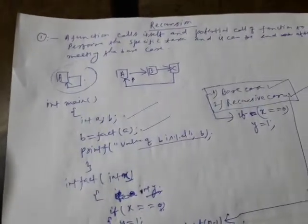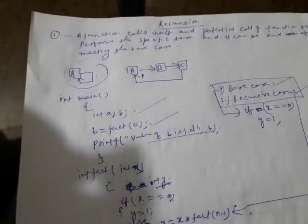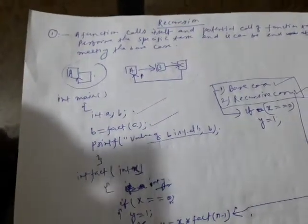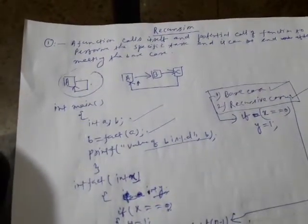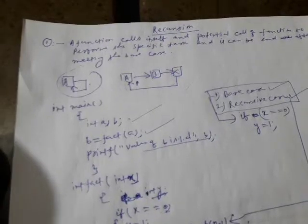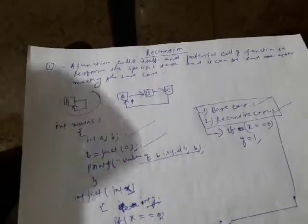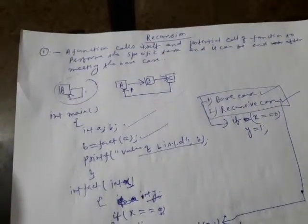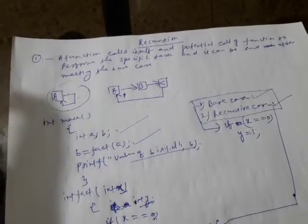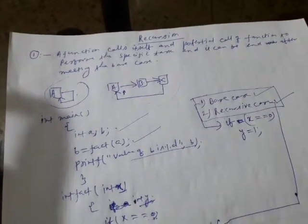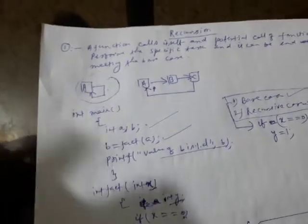In this video lecture we are going to learn about recursion. Many students face a problem when it comes to the definition. They say that recursion is a function that calls itself — but that is not enough. The correct definition is: a function that calls itself, and the potential call of the function to perform a specific task, which ends after meeting the base condition.